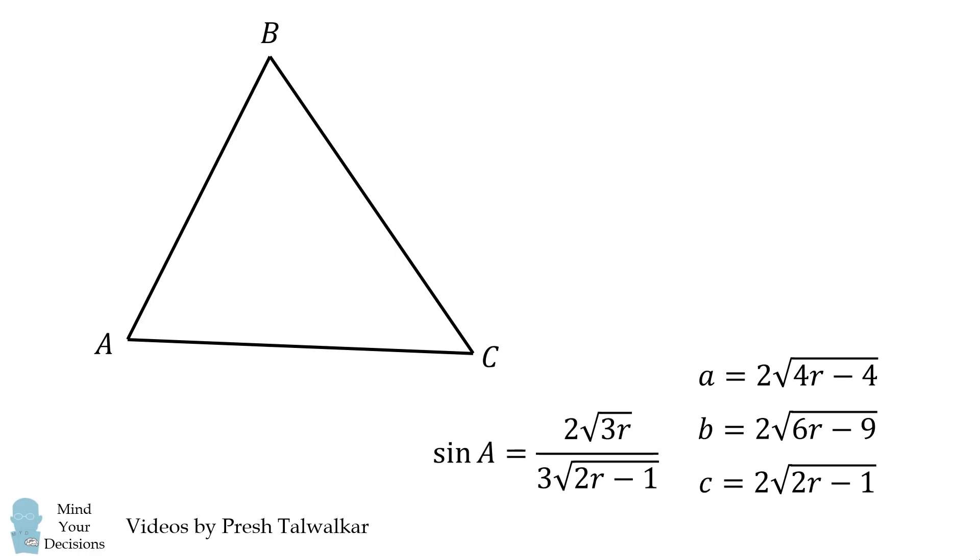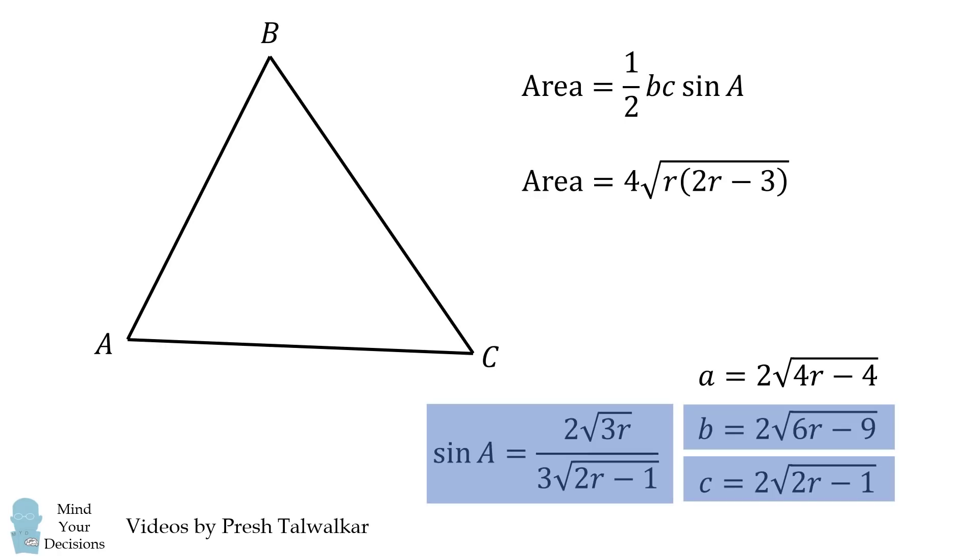We thus have the following expressions all in terms of the radius R. The area of this triangle will be equal to one-half multiplied by side b multiplied by side c multiplied by the sine of angle A. We substitute these values in and we get an expression for the area in just the term R. So all that remains will be to solve for the radius of the circle. How can we do that?